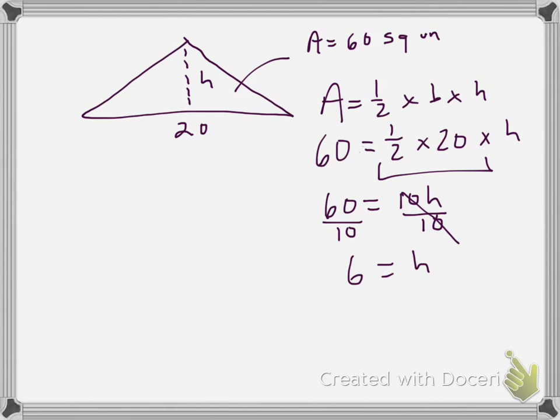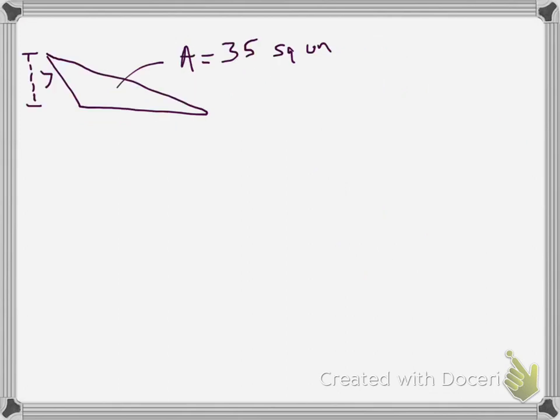What if we knew the height, but we had to figure out the base? Let's see that next. In this example, the height of 7 is given. The area of 35 is given. But we don't know the base. We can still figure it out the same way.